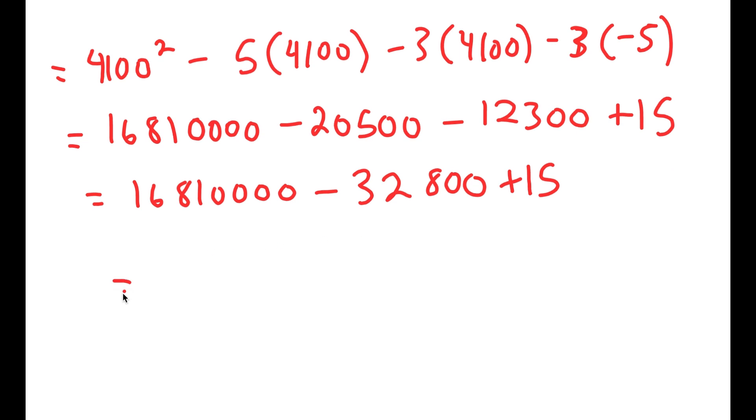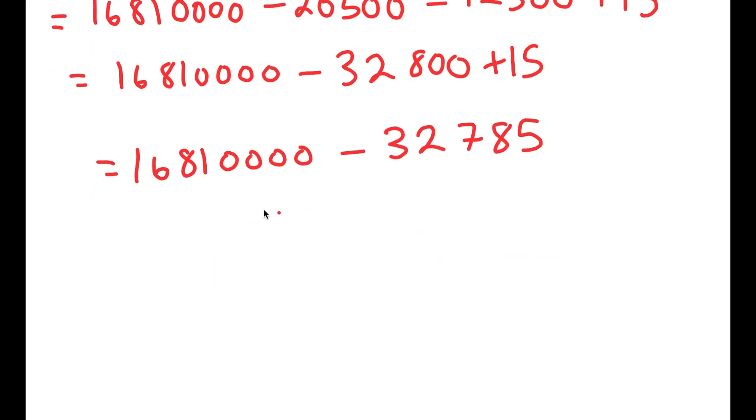Now, a negative number plus a positive number is the same thing as 32,800 minus 15, which is 32,785. So now I have 16,810,000 minus 32,785. I'm actually going to write this like this.